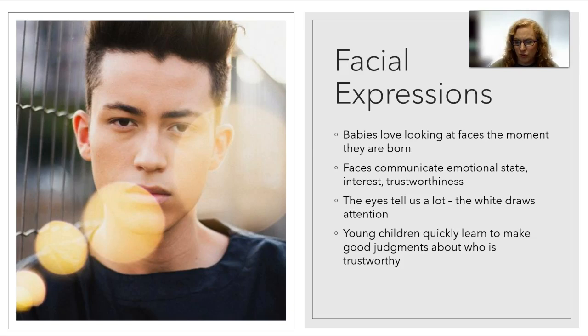Young children pretty quickly learn how to make good judgments about who is trustworthy and who is not. Typically around six months of age, they begin to crawl and really reference their caregiver to figure out who's safe and who's not. If they meet somebody new, they'll look at their caregiver, and the caregiver will either say 'yes, go ahead' or 'no, stay back.' That's part of the way they start to learn that.